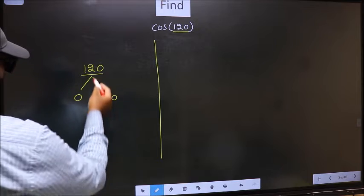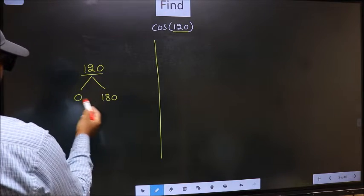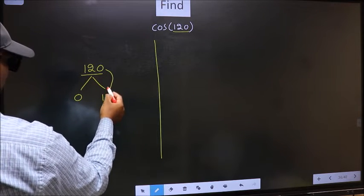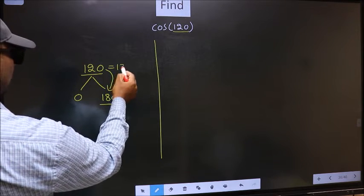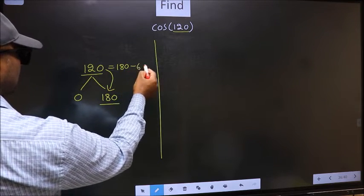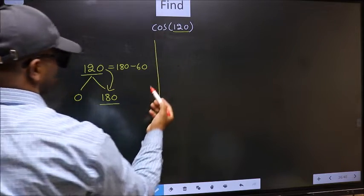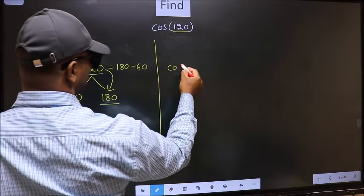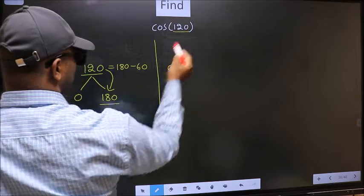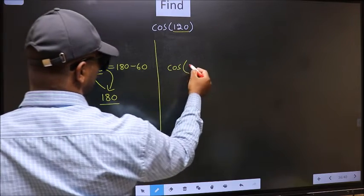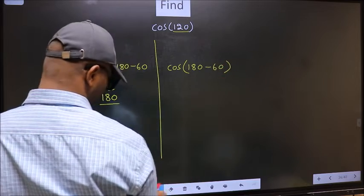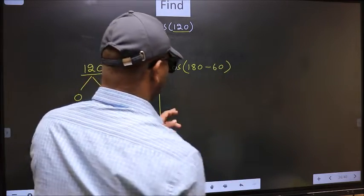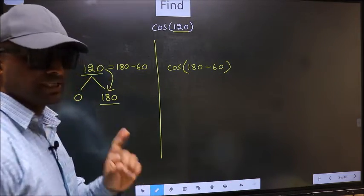Next, 120 is close to which number? This is close to 180. So, 120 now should be written as 180 minus 60. So, this will become cos. In place of this, we write 180 minus 60. This is your step 1.